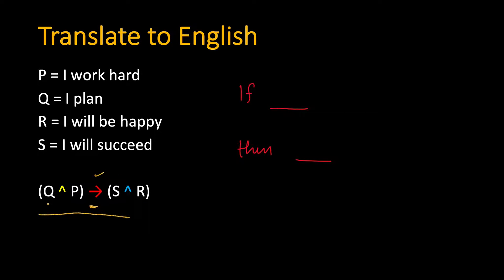Next we have Q and P. So Q is I plan. If I plan, then we have this and. P is I work hard. If I plan and I work hard.